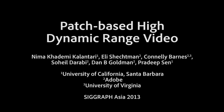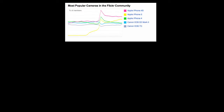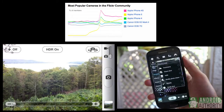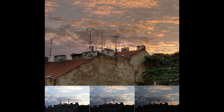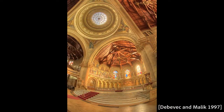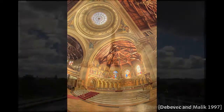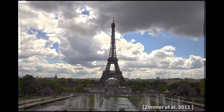High dynamic range still photography has become ubiquitous. Smartphone cameras, which have become the world's most popular cameras, often include an HDR shooting mode in their native camera apps. These typically use temporal multiplexing, acquiring multiple exposures in sequence, then combining them in software to resolve differences due to motion. The results are reasonable for static scenes, and considerable work has been done for handling dynamic scenes.